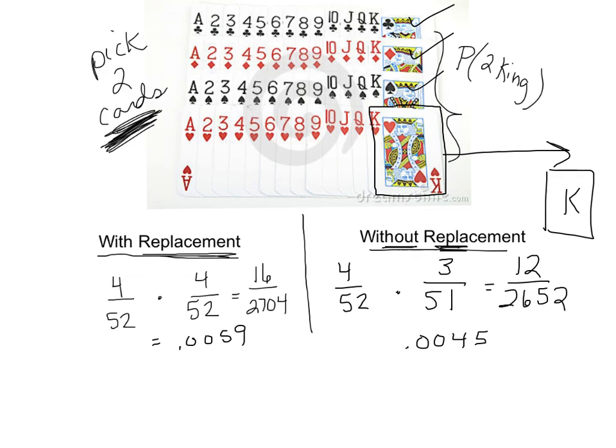This is because, with replacement, these are independent events. We're using what I call and probability. Meaning, we got the probability your first is a king and your second is a king. In and probabilities, we multiply, just like fundamental counting principle. If two things are independent of each other, meaning the second event is not affected by what happened on the first one, then you're just repeating that probability twice.